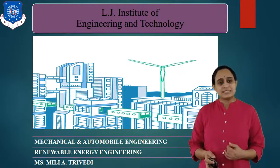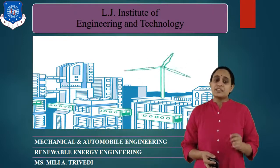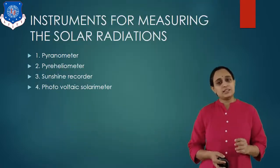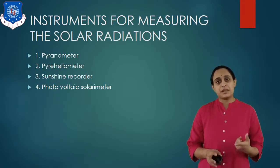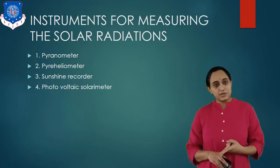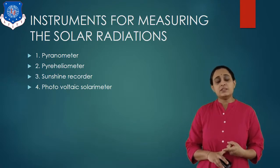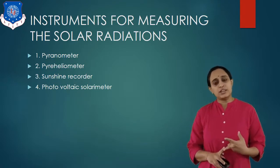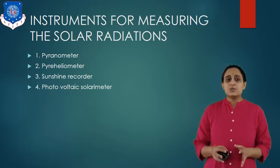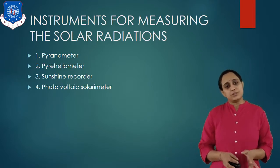The standard instruments for measuring solar radiations are: pyranometer, periheliometer, sunshine recorder, and photovoltaic solar meter. Now let us study about the pyranometer.